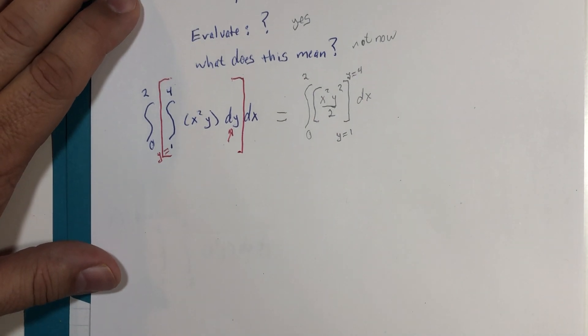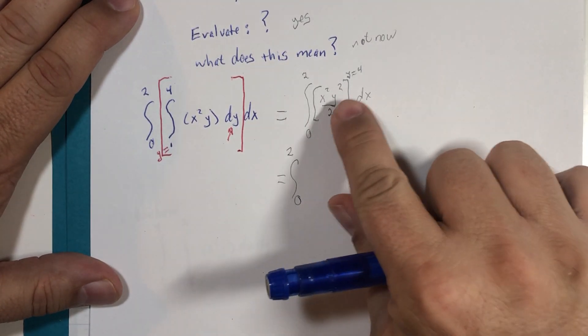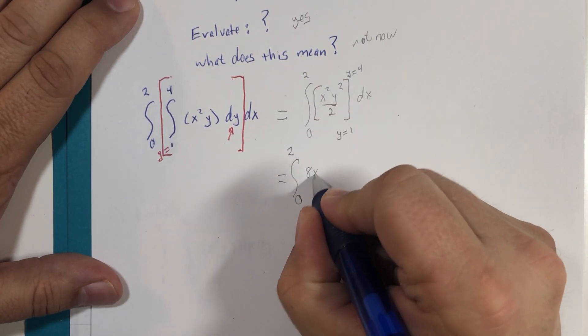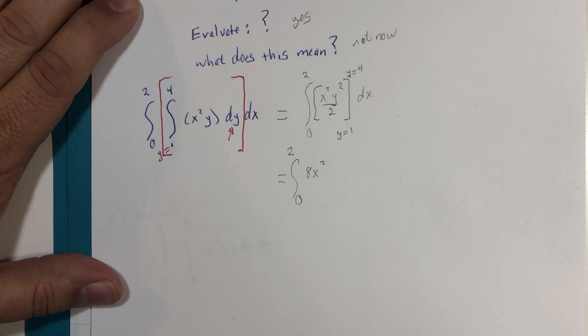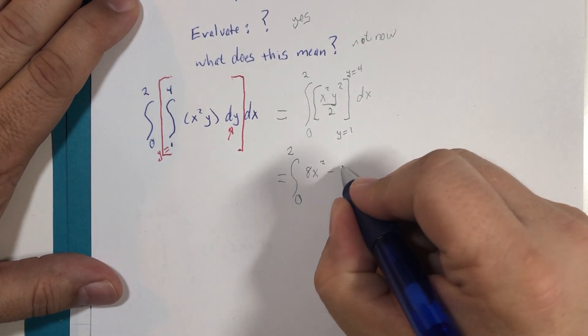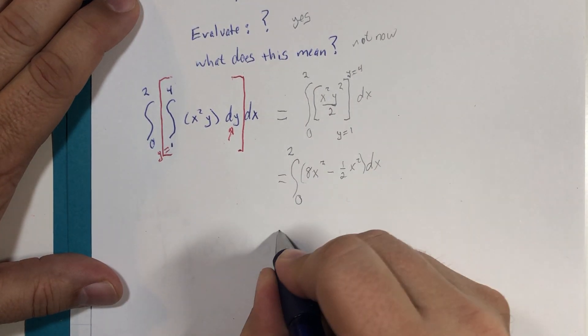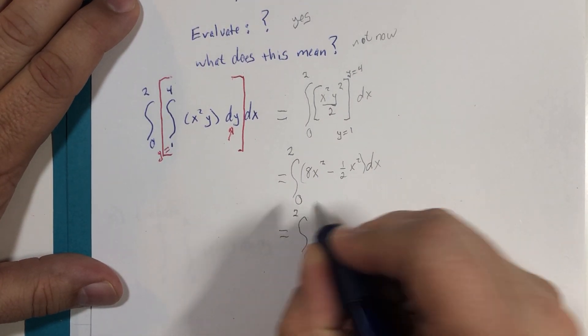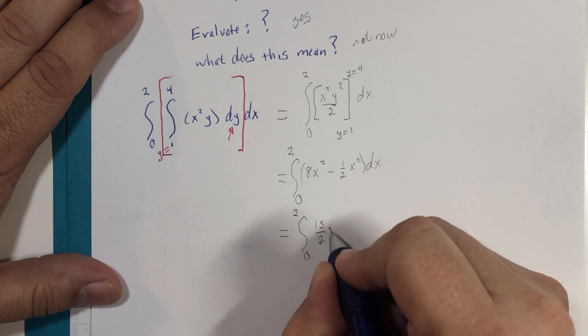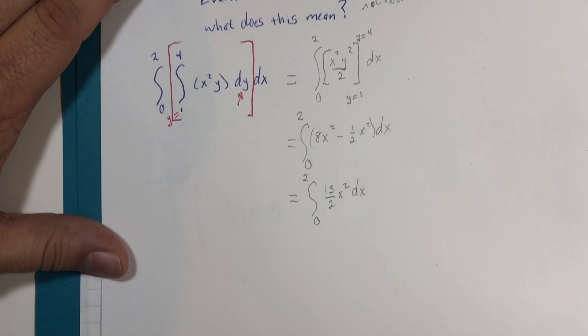And then we get to our fundamental theorem of calculus. Zero to two. Four squared is 16 over two is eight. So you have eight x squared. You'll find that maybe I should have left the fraction there. And minus, if y is one, we're going to get one half x squared. And those are indeed like terms from zero to two, seven and one half, or you can call it 15 halves x squared.